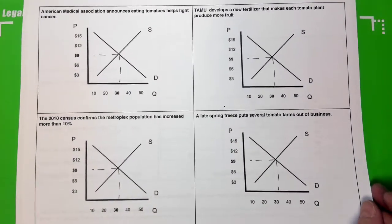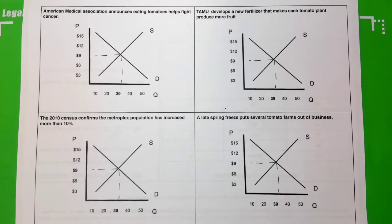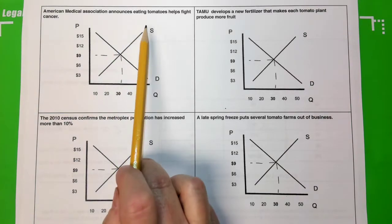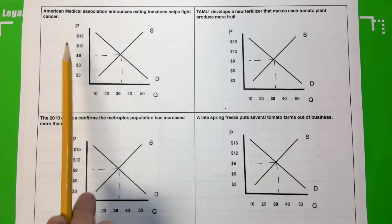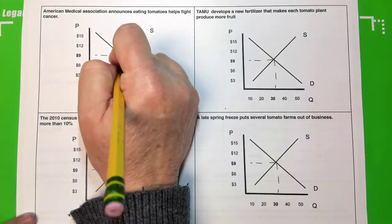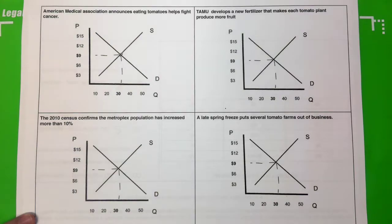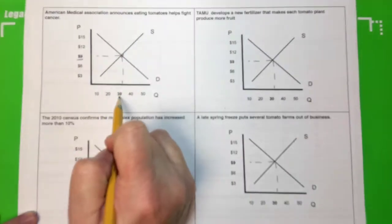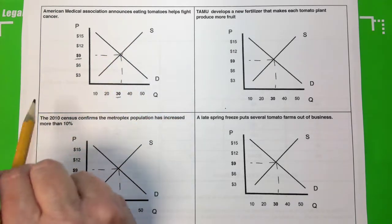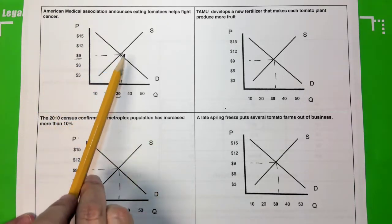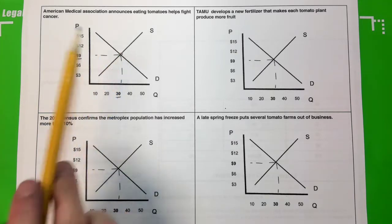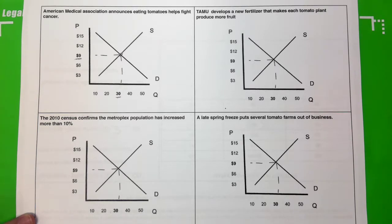Now let's look at how changes in supply and demand impact equilibrium prices and quantities. What you saw on the front side — that market schedule — we've taken that information and plotted it on a graph. Here's our supply curve, showing all the prices and quantities producers will produce, and here's our demand curve showing all the prices and quantities we'll buy at each price point. On the graph, equilibrium is always represented by the price point and quantity where supply and demand intersect.